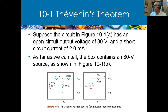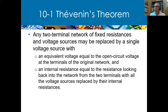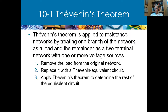We just want to make sure that the two outputs of our equivalent circuit work the same way as the original circuit. Any two-terminal network of fixed resistances and voltage sources may be replaced by a single voltage source. We calculated the open circuit voltage and the internal resistance. There are two ways to do that: by shorting out the power supply and calculating resistance from the two terminals, or by calculating the short circuit current and dividing the equivalent voltage by that current to get our equivalent resistance.